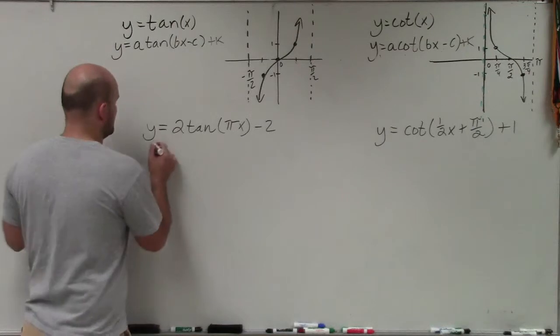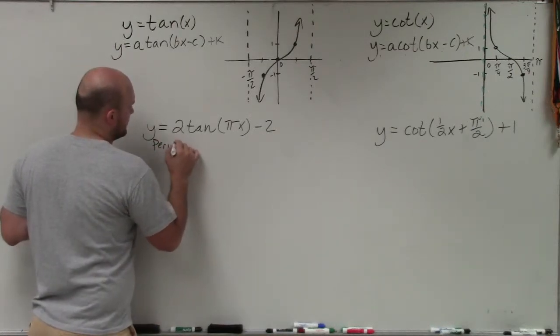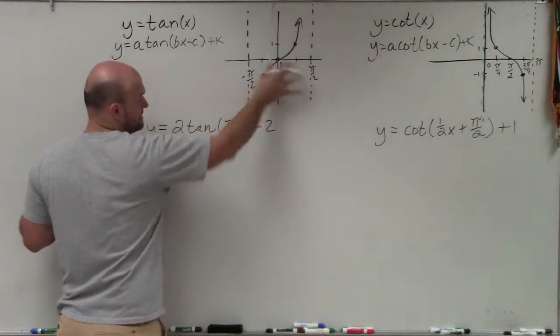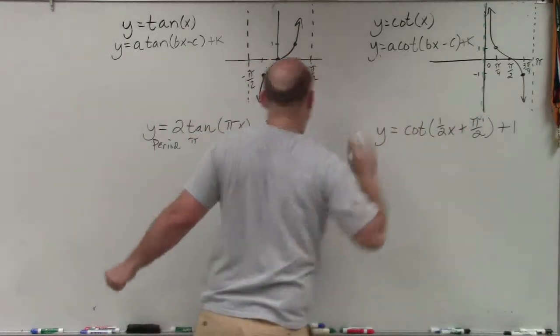But the first thing I'm going to do is figure out the period. Now remember, period is going to be only π. The distance of our periods for our tangent and cotangent is only π.